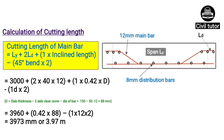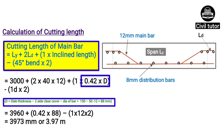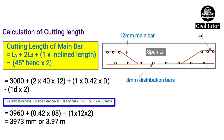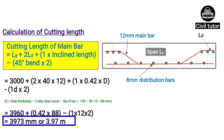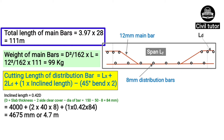The cutting length of the main bar equals LY plus 2 times development length plus 1 times inclined length minus 2 times 45-degree bend. LY is 3000 mm, development length is 40 times 12. The effective depth d equals slab thickness minus 2 times clear cover minus bar diameter: 150 minus 50 minus 12, giving d equal to 88 mm. The cutting length of the main bar is 3973 mm, or approximately 3.97 meters. Total length of main bars equals cutting length times 28 bars, giving 111 meters.